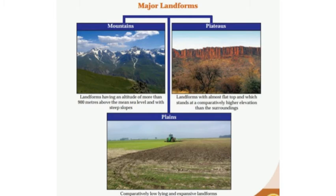Plateaus are landforms with almost flat tops which stand at a comparatively higher elevation than the surroundings. Mountains are landforms that have an altitude of more than 900 meters above the main sea level and with steep slopes.